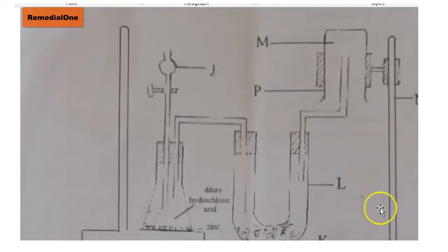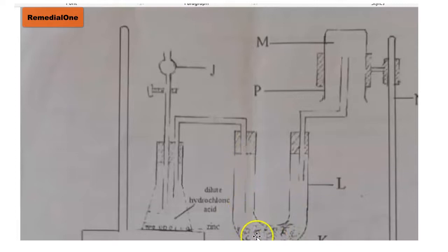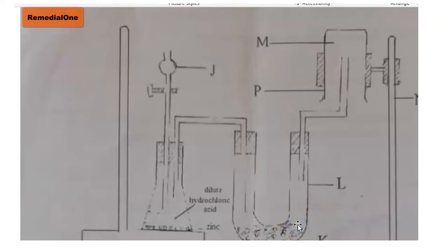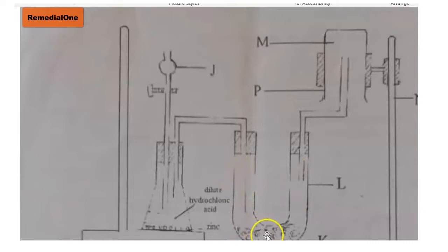We have been asked to state the function of L. L is our U-shaped glass tube, also called a U-tube. Its function here is that it holds the drying agent, which is K — calcium chloride. It is the U-tube which is holding that drying agent. As the gas passes over the drying agent, it passes through the U-tube channel and then through the delivery tube to be collected in the gas jar.